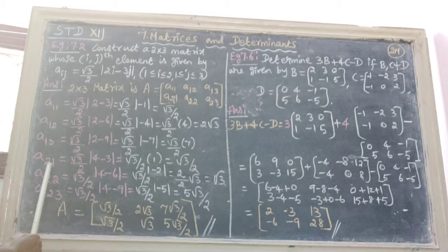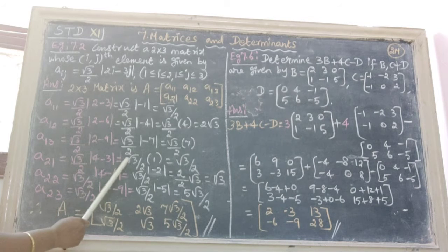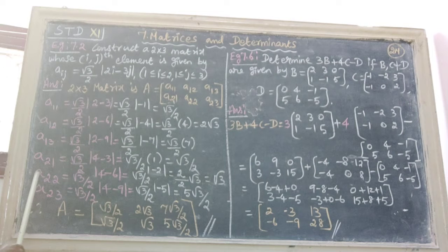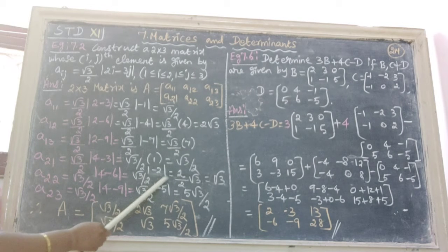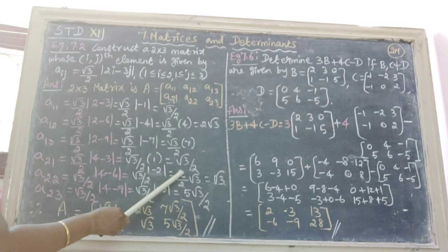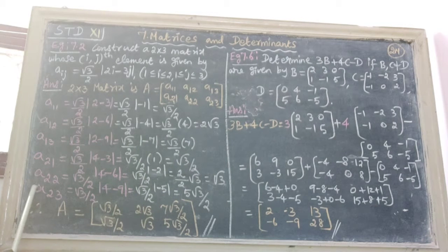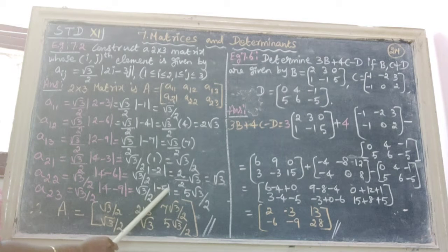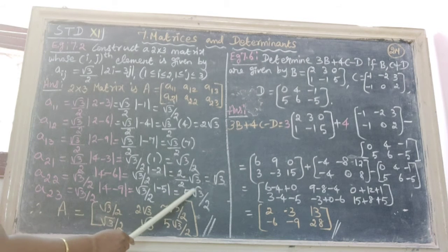Next one is A21, here put i is equal to 2, j is equal to 1. We get the answer root 3 by 2 plus 1. Next one is A22, we get root 3 by 2 modulus minus 2, then cancelling 2 we get root 3. Next one is A23, we get root 3 by 2 modulus minus 5 which is equal to plus 5, we get 5 root 3 by 2.